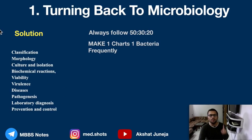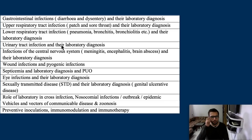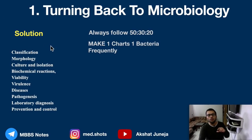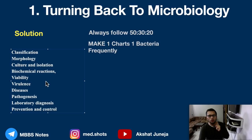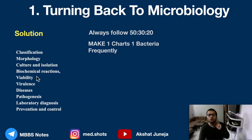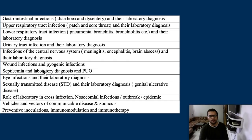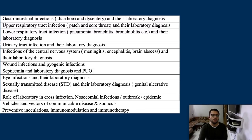Follow this approach and make charts. For diseases important at your level in microbiology, make the same type of chart — for example, for gastrointestinal infections, list the organisms involved, their pathogenesis, incubation period, lab diagnosis, prevention and control. Once you are thorough with these infections along with the bacteriological properties, microbiology becomes a piece of cake.